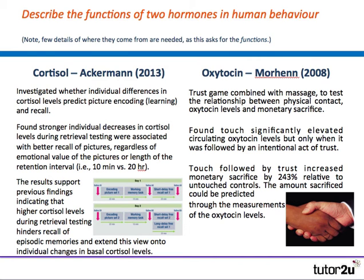Students need to be able to say what a hormone is and what the difference is between a hormone and a neurotransmitter, then go straight into describing the function. Cortisol levels are very important in stress, depression, and memory — higher cortisol levels seem to hinder recall of episodic memories. Oxytocin is very important in trust, love, and mothering. They don't have to go into depth describing studies; they do need to describe the functions of the hormones.